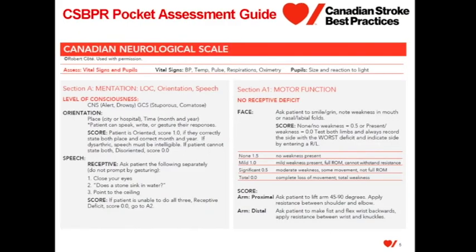The Canadian Stroke Best Practice Recommendation Stroke Assessment and Prevention Pocket Guide, on pages 11 and 12, provides instructions on how to complete the Canadian Neurological Scale. This tool will be an excellent resource to utilize as I provide an overview of the tool and at the end when we are walking through several case scenarios.